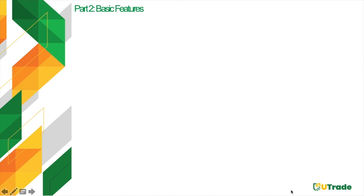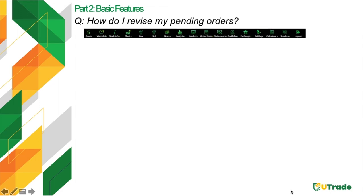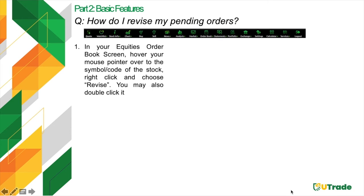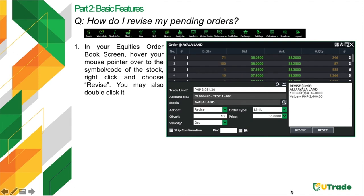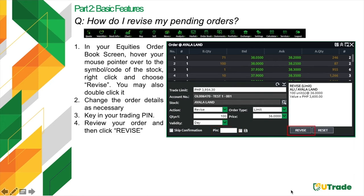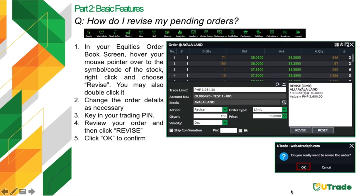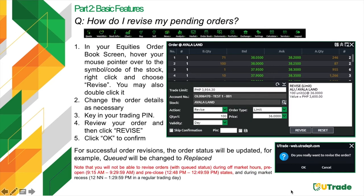If you want to revise a pending order, in your Equities Order Book screen, hover your mouse pointer over the stock's symbol or code, right-click, and choose Revise — or double-click it. The revise order ticket screen will pop up. Change the order details as necessary — you can change the quantity, price, or validity type. Type your trading PIN, hit the Revise button, and click OK to confirm. Note that you cannot revise orders with queued status during off-market hours, the last 15 minutes of the pre-open state, and the last 2 minutes of the pre-closed state.